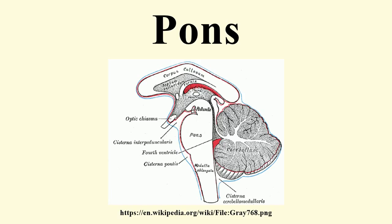Most of it appears as a broad anterior bulge rostral to the medulla. Posteriorly, it consists mainly of two pairs of thick stalks called cerebellar peduncles. They connect the cerebellum to the Pons and midbrain.